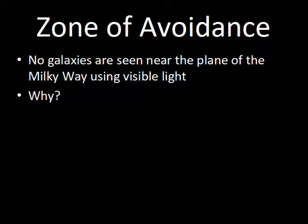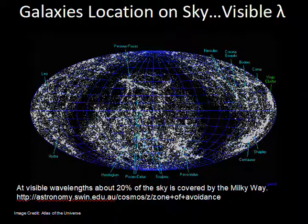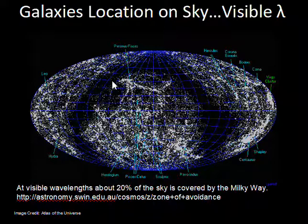No galaxies are seen near the plane of the Milky Way galaxy when we use visible light. Here is a bigger survey than Hubble's showing where galaxies are located — these are galaxies, not stars, plotted on this map, done using visible light. The zone of avoidance is where the galaxies are not located. The galaxies are actually evenly distributed across the sky; it's only that we can't see galaxies in this region. They're not avoiding the region — we simply cannot see the distant galaxies there.